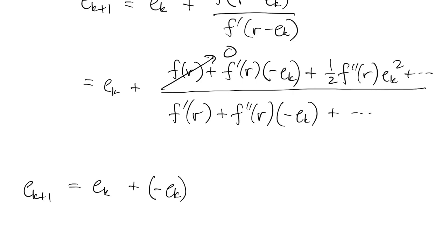Then I can multiply both numerator and denominator by 1 over f prime at r. Factor out minus ek in the numerator.